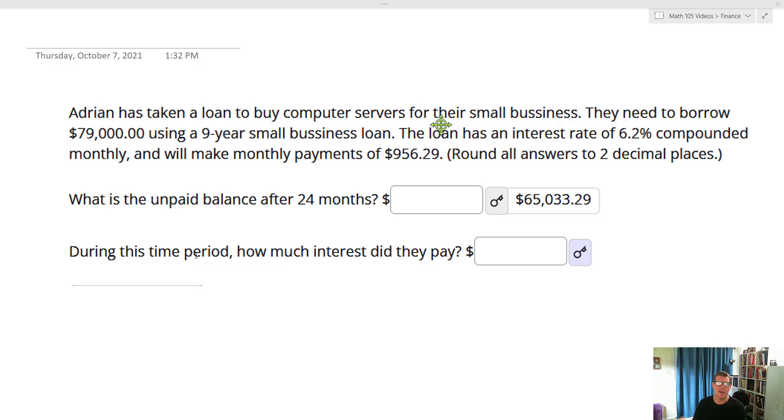So let's take a look. Let's say we have Adrian has taken a loan to buy computer servers for their small business. They need to borrow $79,000 using a nine-year small business loan. The loan has an interest rate of 6.2% compounded monthly, and will make monthly payments of $956.29. What is the unpaid balance after 24 months?